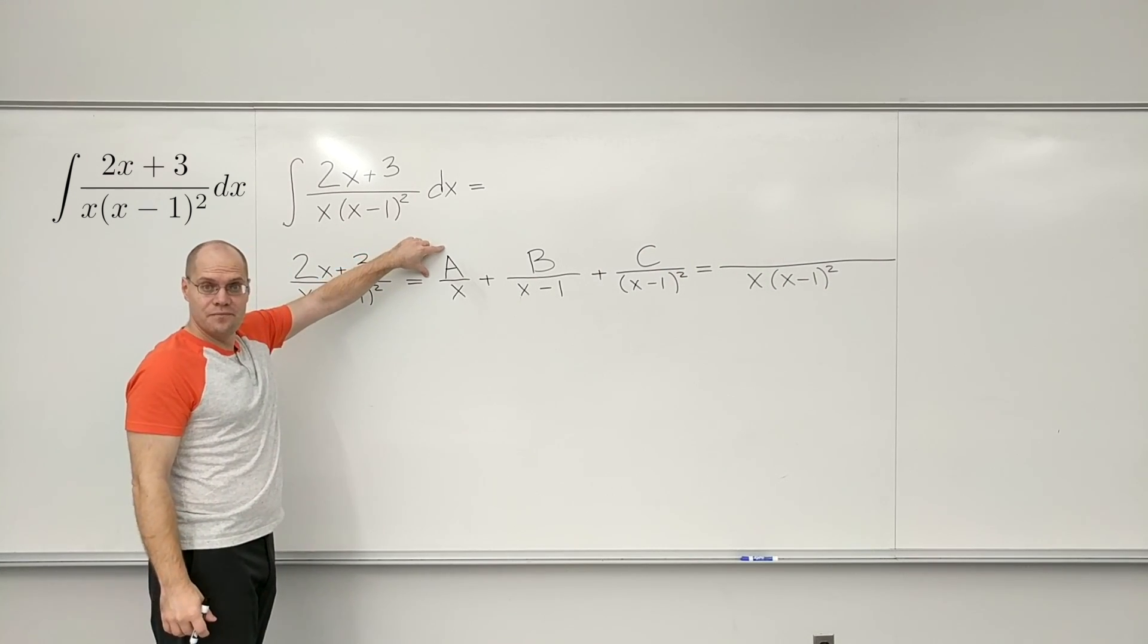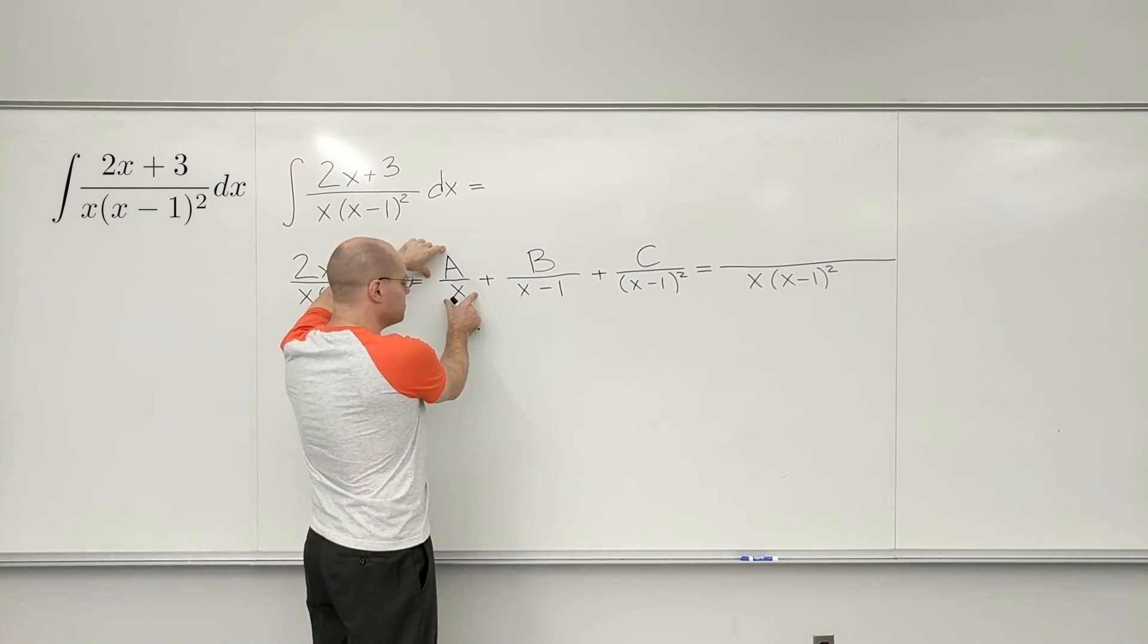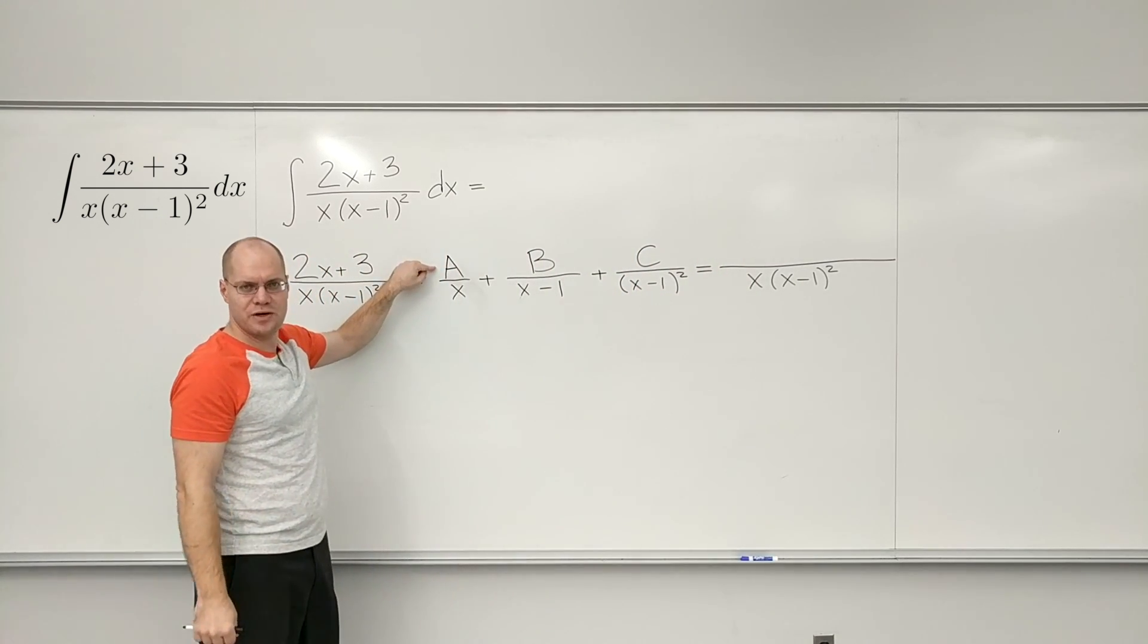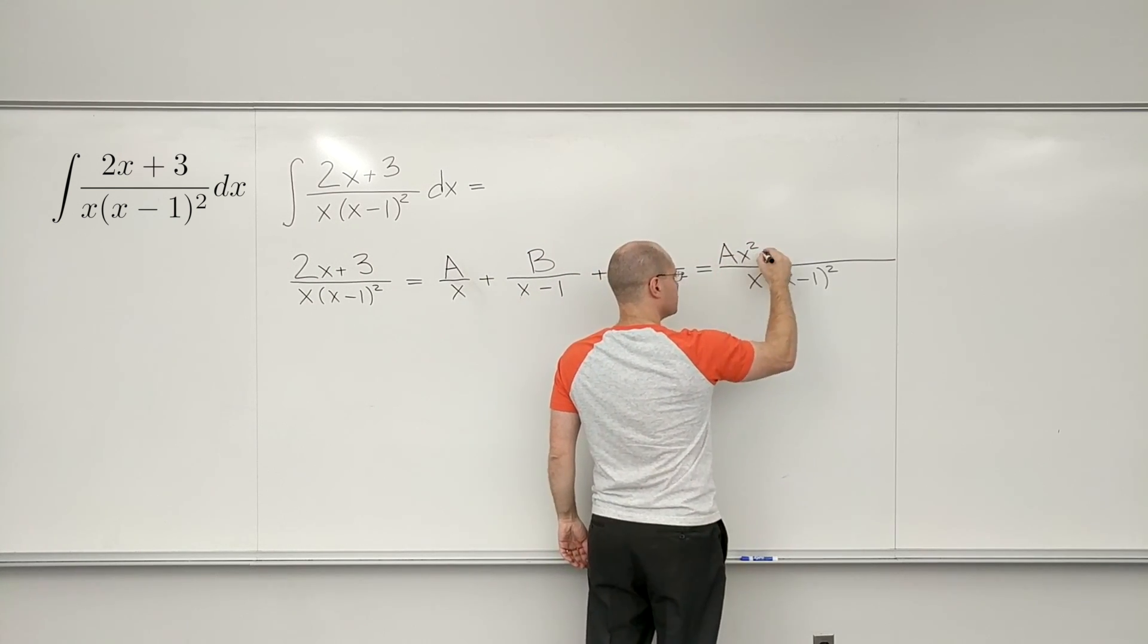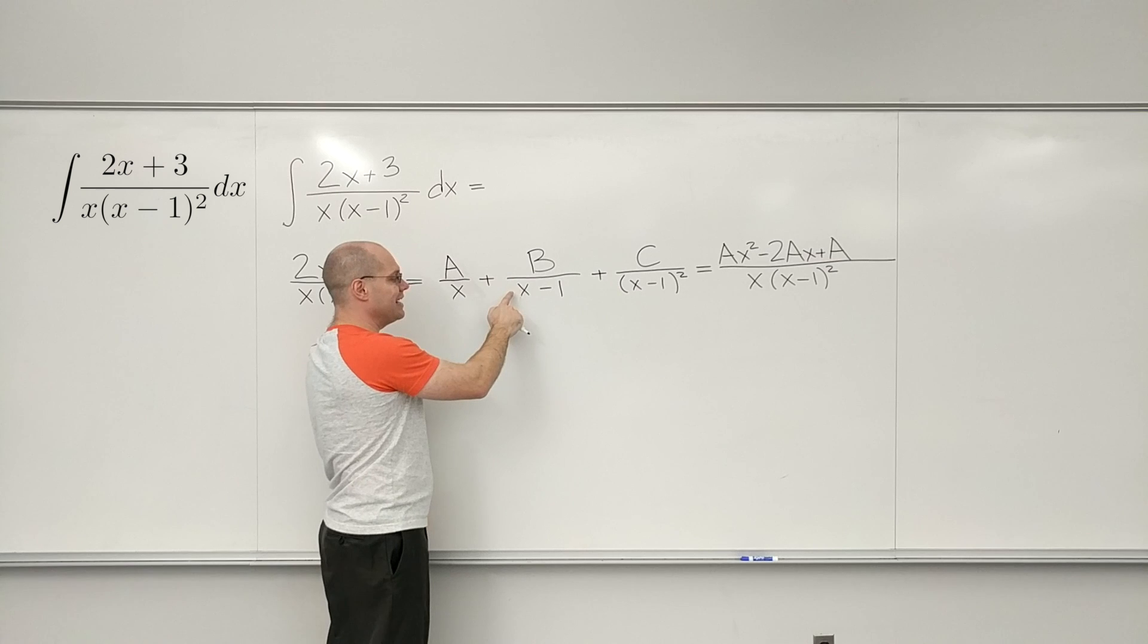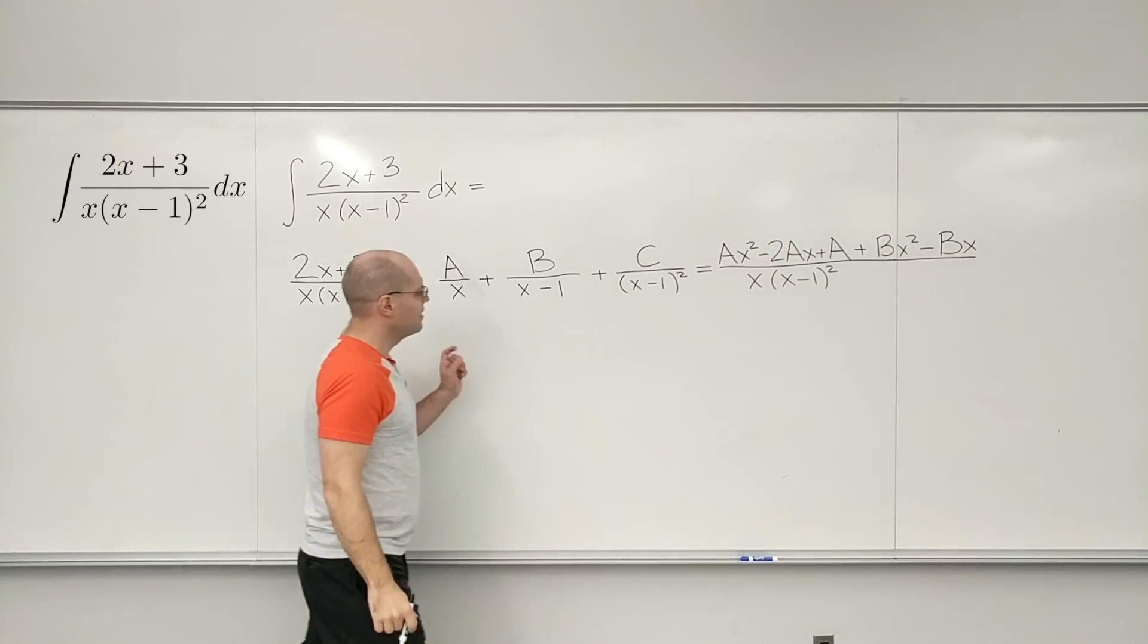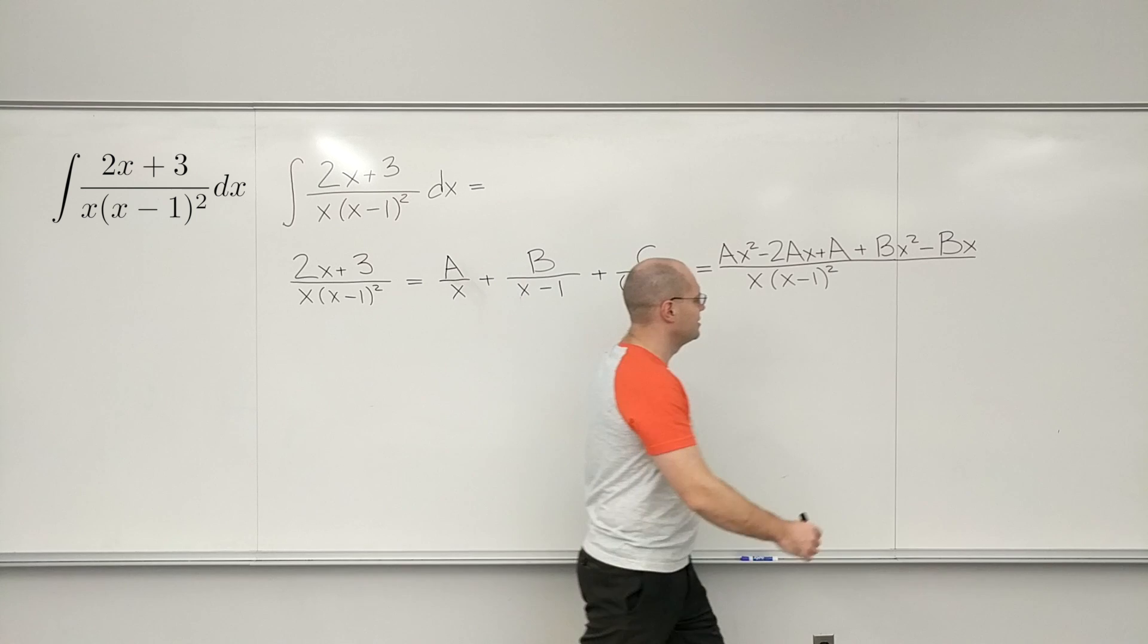And so without focusing on too much detail, I'll just write out what's in the numerator. Well first let's get the denominator right. This guy, A, will get multiplied by x minus 1 squared, because that's what's missing in the denominator here, compared to this denominator. So A needs to be multiplied by x minus 1 squared, and I will actually multiply it out because I have to combine like terms. That's A times x minus 1 squared. This guy is lacking x times x minus 1. So that's what B will get multiplied by, and once again I'll just multiply it out. And then C, the only thing that this fraction is lacking is a multiple of x. So it'll just be plus Cx.